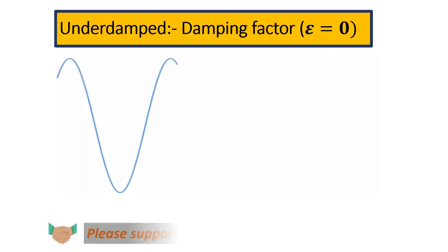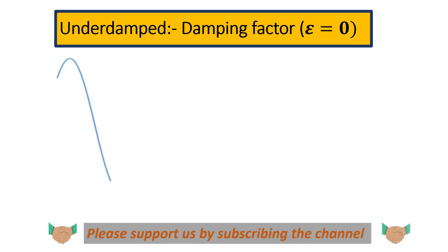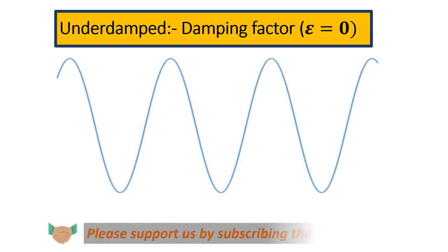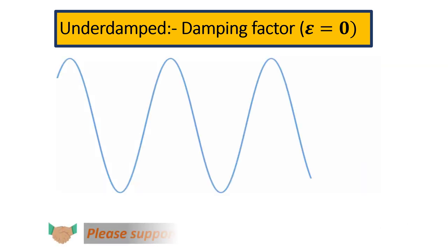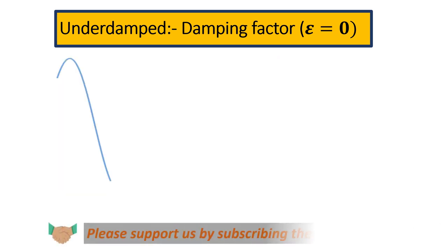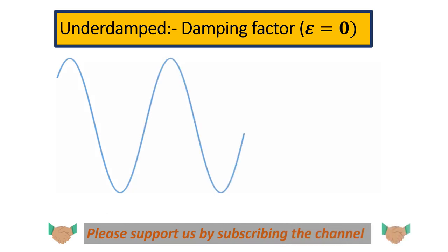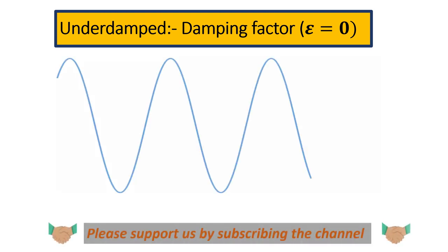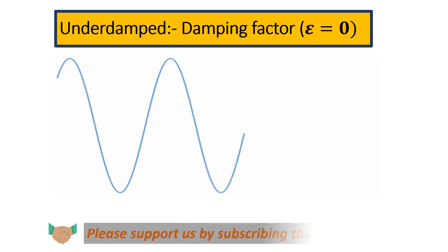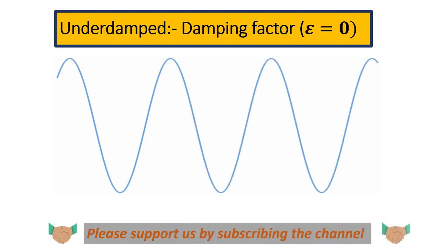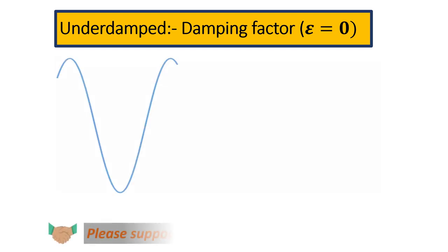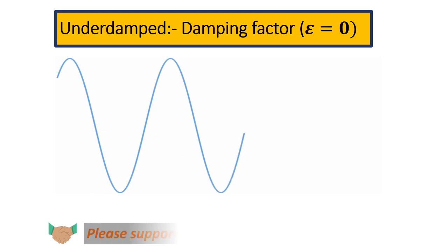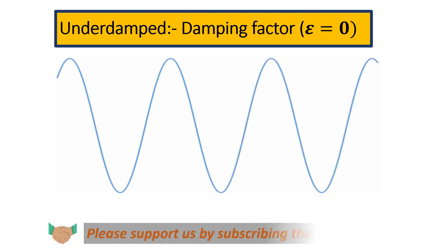Taking the first case of an underdamped system in which the damping factor is equal to zero — just by looking at the plot we can say that if the damping factor is zero and the mass element is set in motion, the natural motion will continue indefinitely in theory.